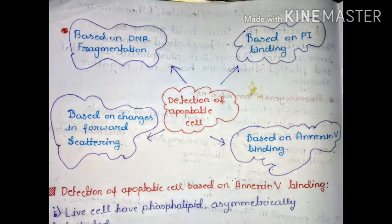Today we discuss the detection of apoptotic cells. Apoptosis is a mechanism for the control of cell number in eukaryotes. We can detect apoptotic cells from necrotic cells or normal live cells based on DNA fragmentation, PI binding, changes in forward scattering, or based on annexin-5 binding.